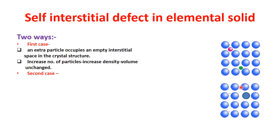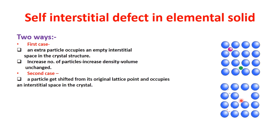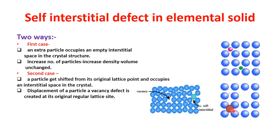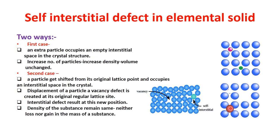In the second case, in an elemental solid, a particle gets shifted from its original lattice point and occupies an interstitial space in the crystal. Because of the displacement of this particle, a vacancy defect is created at its original regular lattice point and, at the same time, an interstitial defect results at its new position. In this case, the density of the substance remains the same, because there is neither loss nor gain in the mass of the substance.